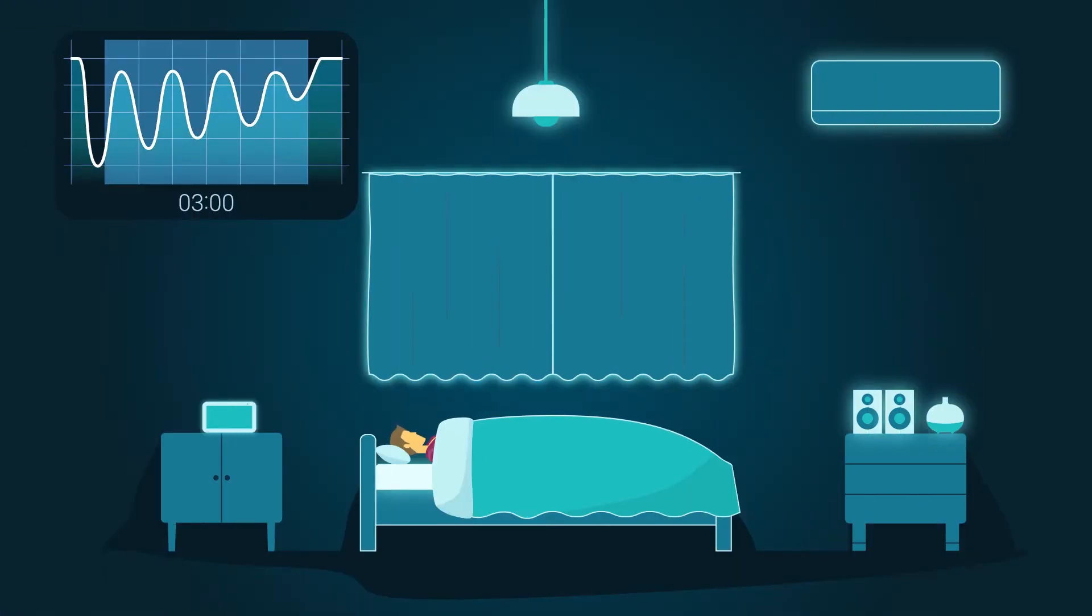Once you're fully asleep, it switches off all the appliances, except for the lamp and the auto-adjustment system for the air conditioning.